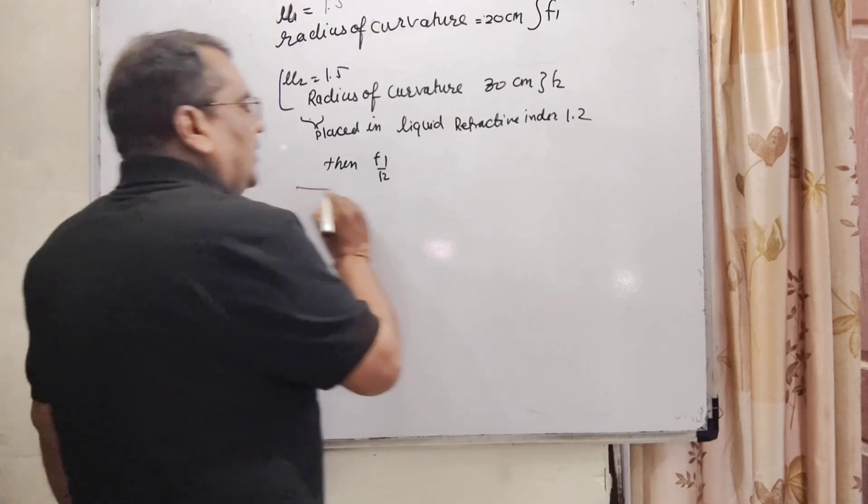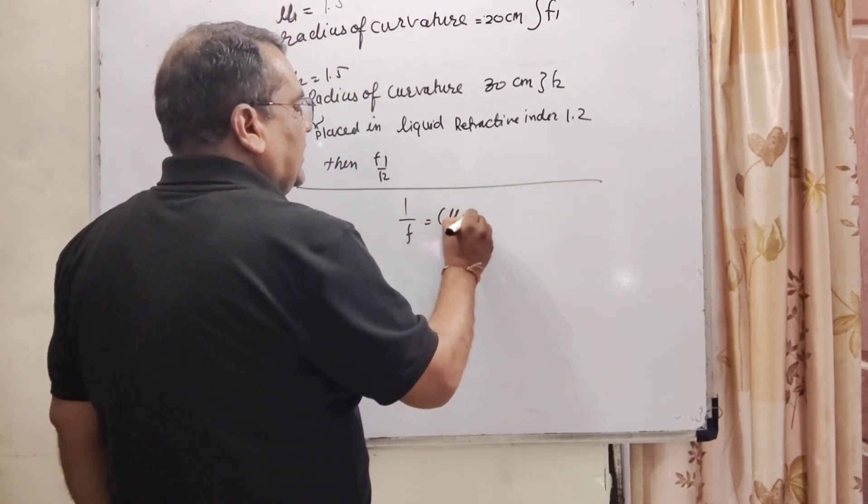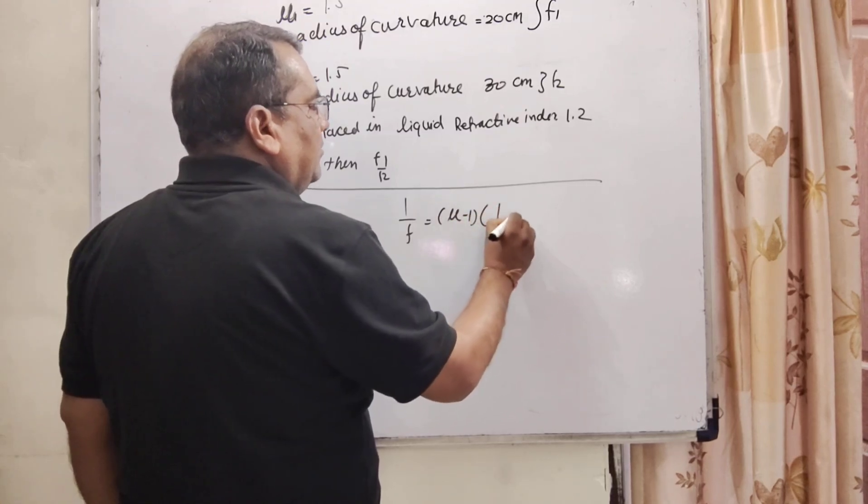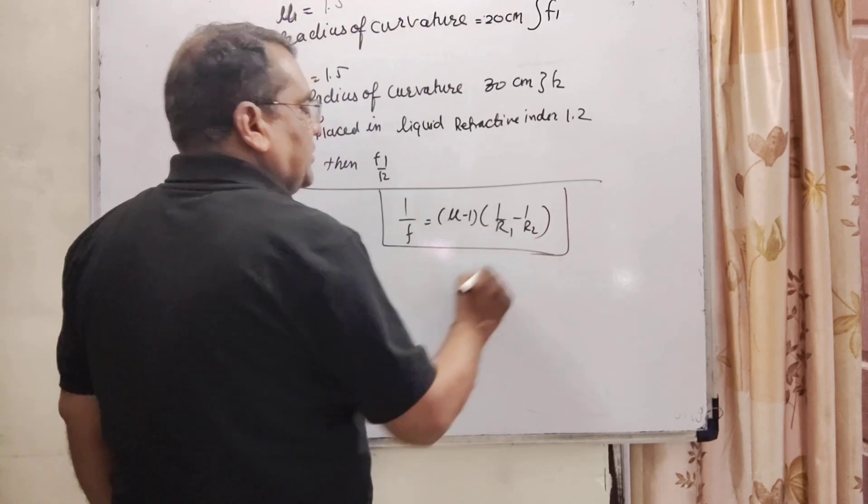So here we have using the formula 1 by f is equal to mu minus 1, 1 by r1 minus 1 by r2. This is the key point of this question.